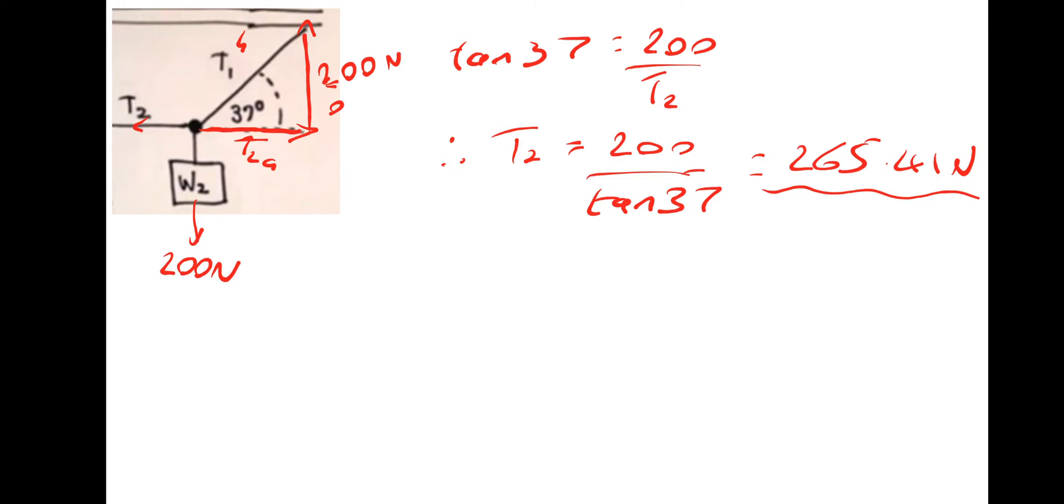So let's move on then. Let's do the hypotenuse now to find T1. So the hypotenuse and we're going to use the opposite, the 200. So that would be sin 37 is equal to opposite divided by hypotenuse. So that would be 200 divided by hypotenuse T1.